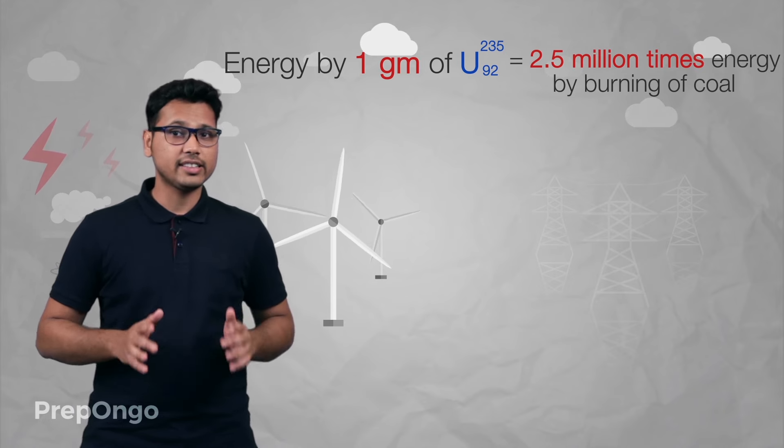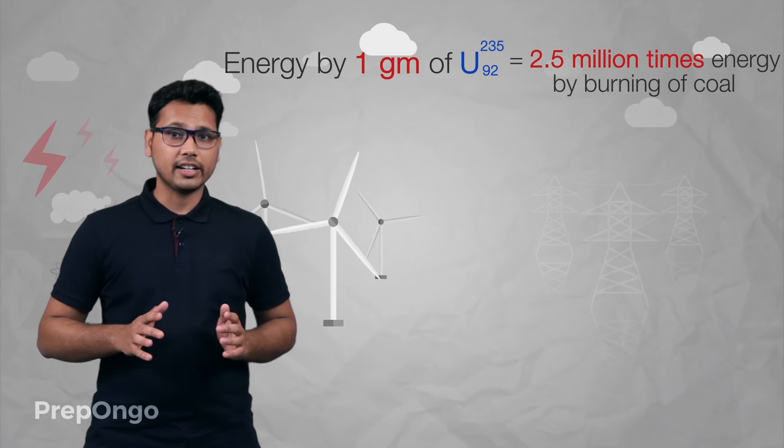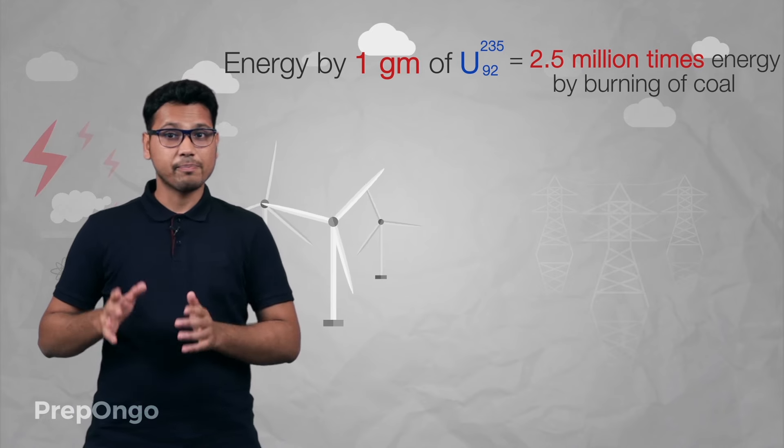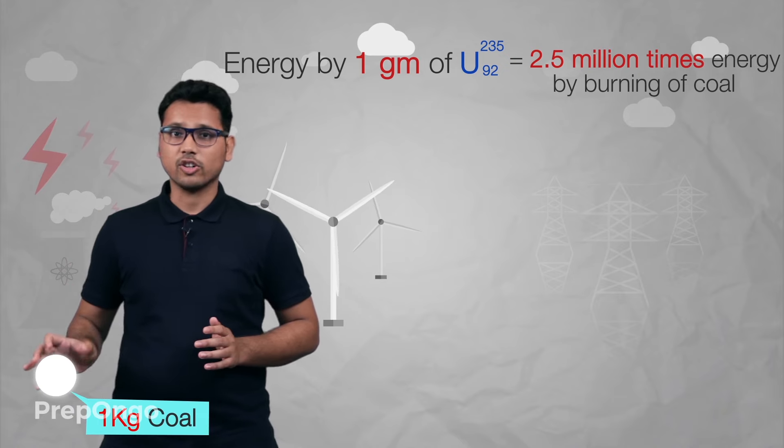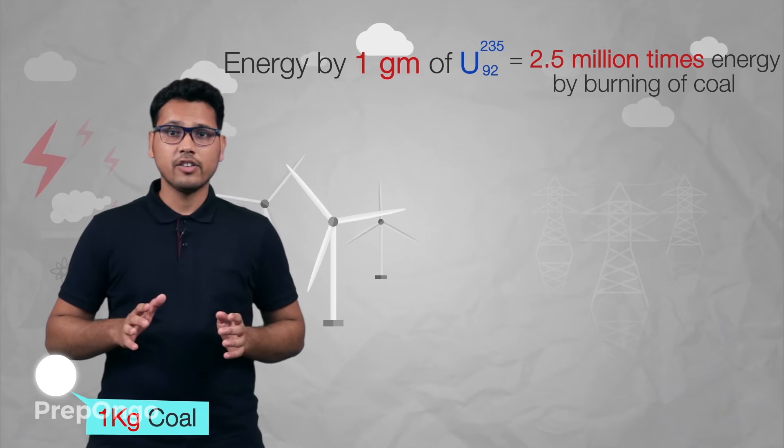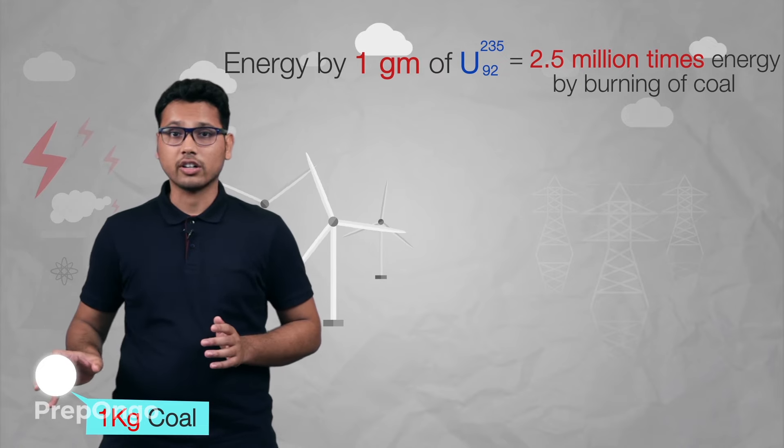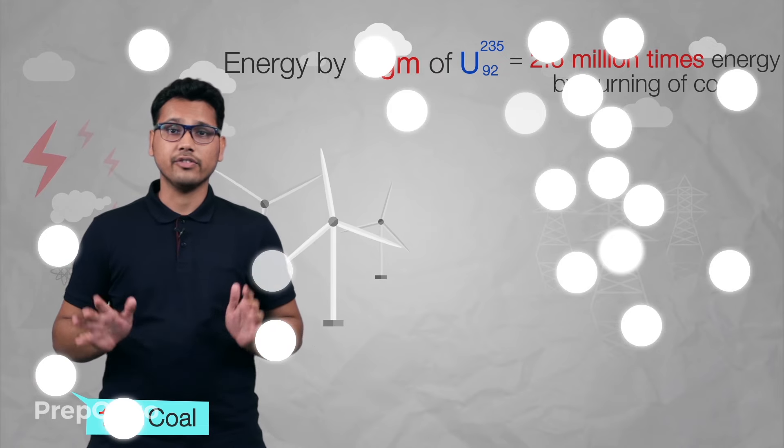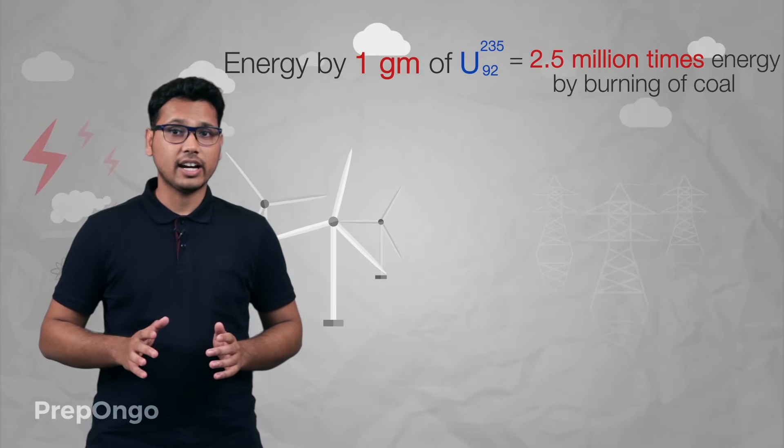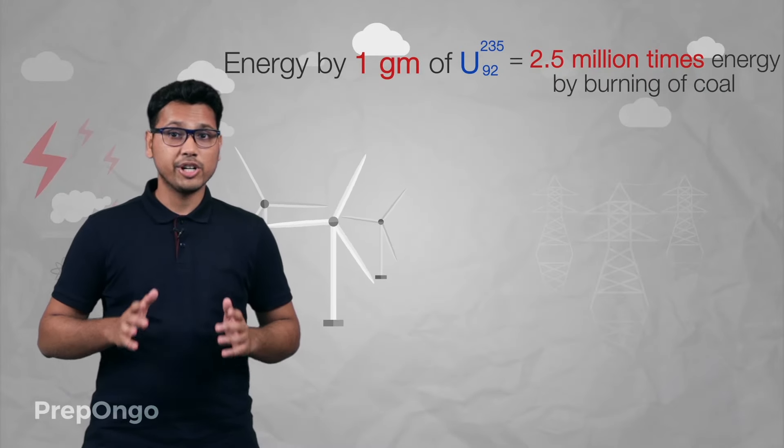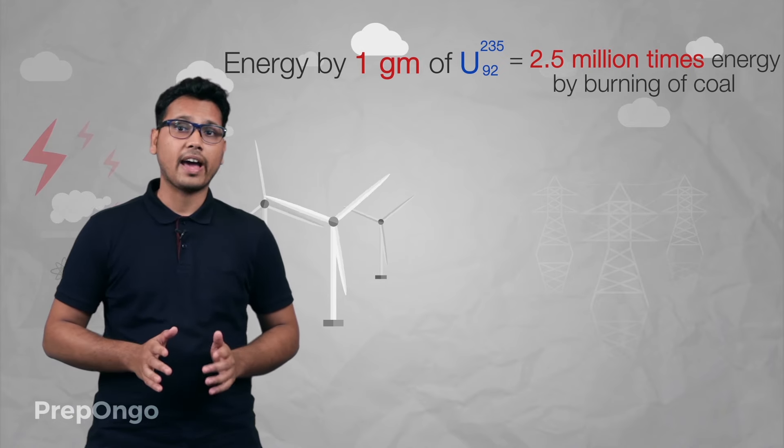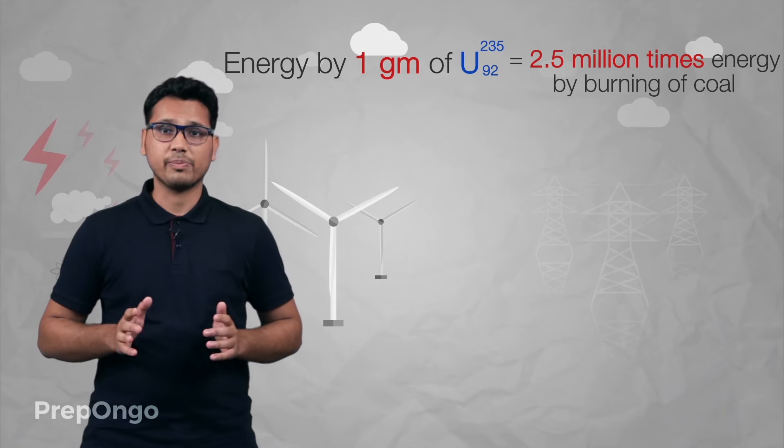Now to understand this scale, consider that burning of one kilogram of coal is represented by this dot. Now if we have to express the energy released by one gram of uranium in terms of this dot, our whole screen will be covered by these dots. So we can say that the energy produced by uranium is really huge in comparison to coal or petroleum.